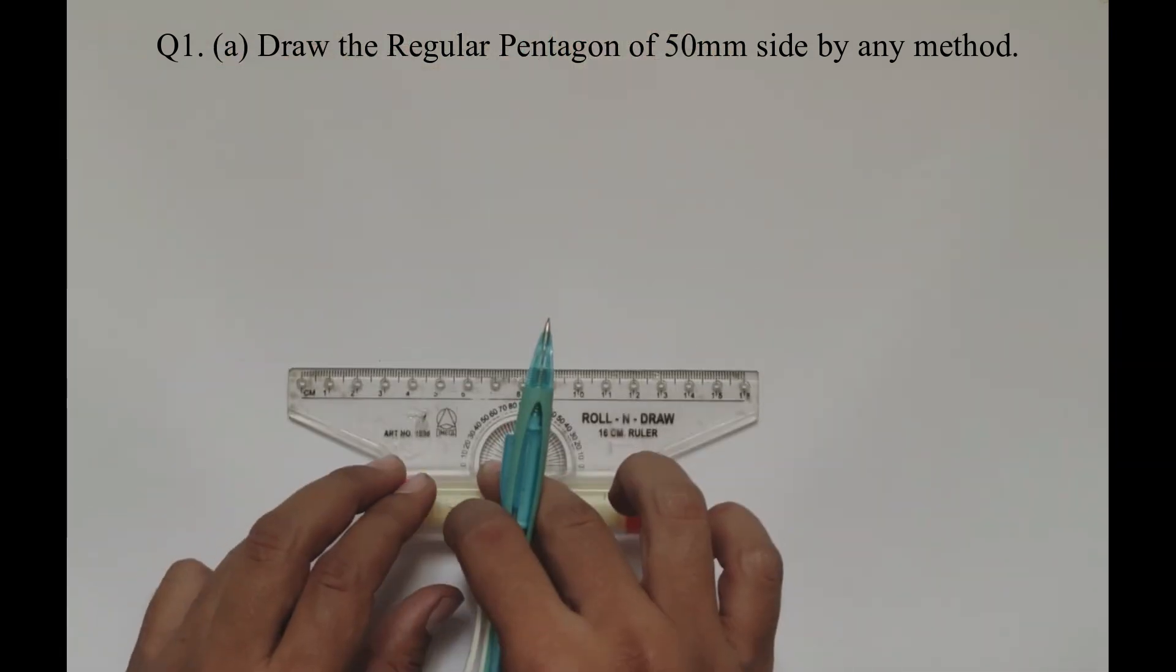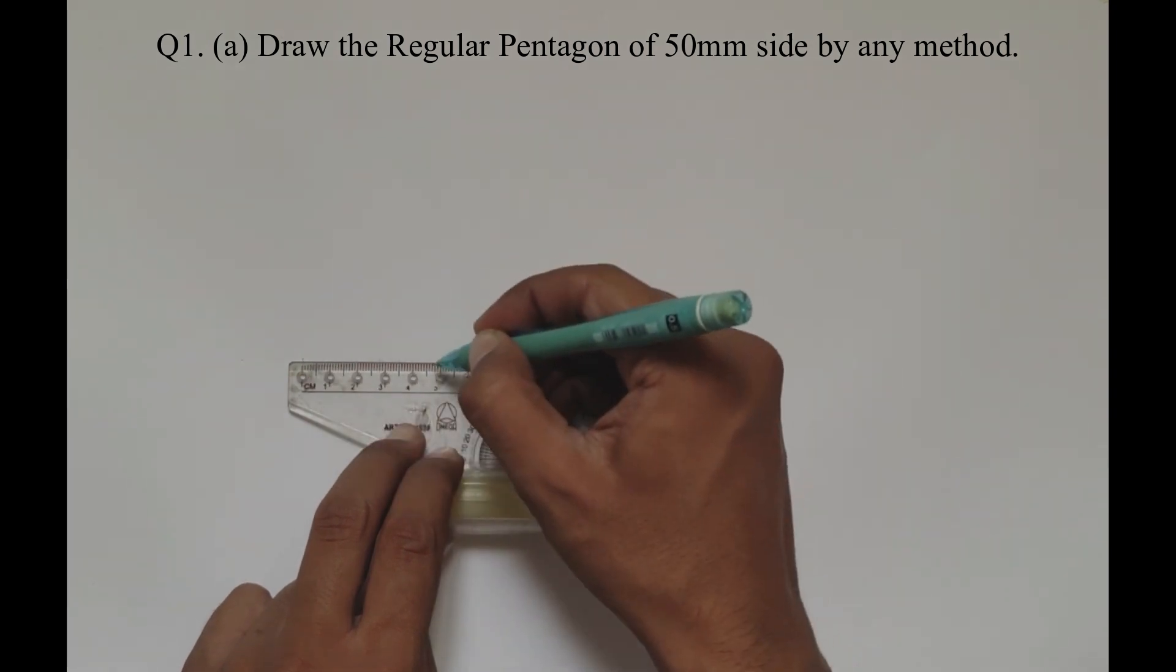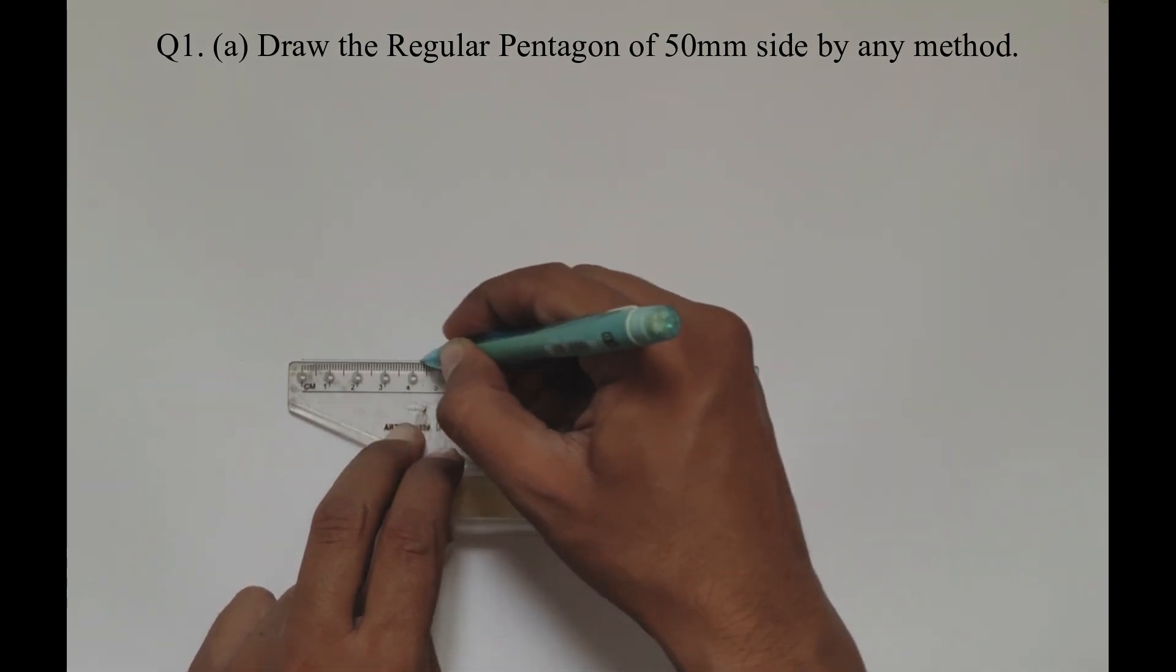The first step is to draw a horizontal line of the given dimension, that is 50mm in our question.